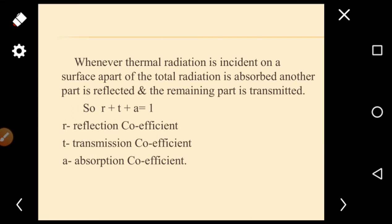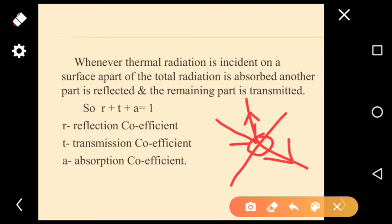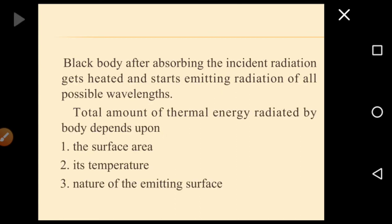When radiation is incident on a surface, a part of the total radiation is absorbed, another part is reflected, and the remaining part is transmitted. Mathematically: r + t + a = 1, where r is the reflection coefficient, t is the transmission coefficient, and a is the absorption coefficient.